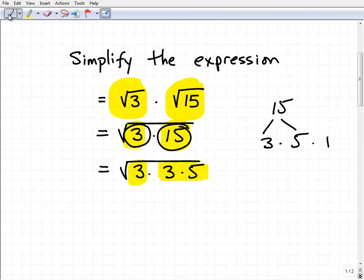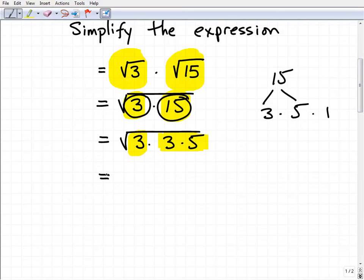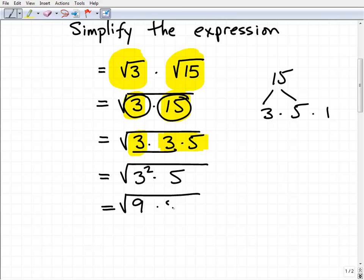Now, that basically gives me the ability to look and see if there's any squares inside the square root. And here I can write 3 times 3 as 3 squared. So that's going to be 3 squared times 5. See where I'm going with this? I have 3 times 3. That's the same thing as 9 or 3 squared. Let's go ahead and just write it this way: 9 times 5.